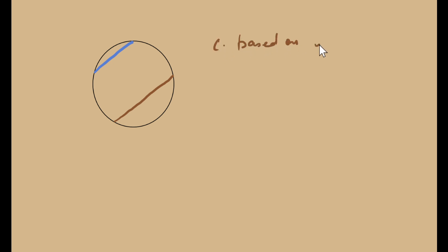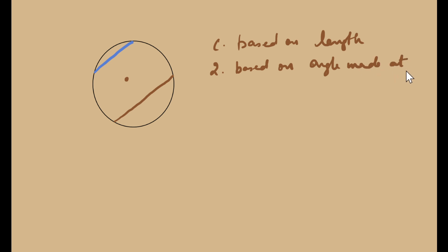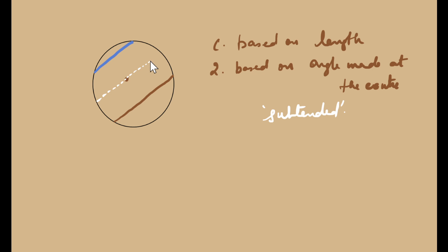We can classify chords based on their length. Another way is to classify chords based on the angle they make at the centre — the angle subtended at the centre. Now let me draw a third chord which passes through the centre. This is the longest chord because it passes through the centre; this has to be the longest chord, and this is the diameter of the circle.